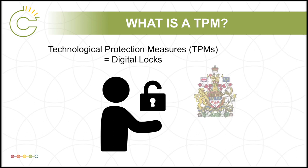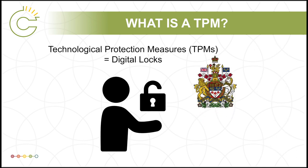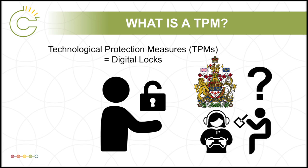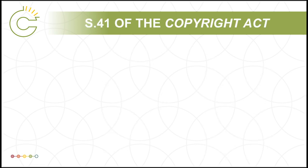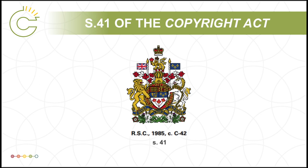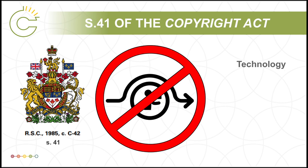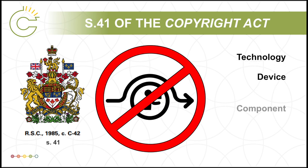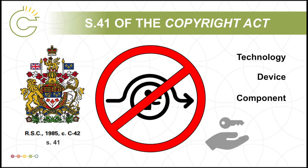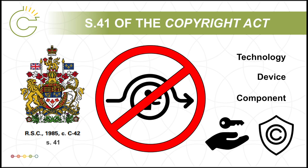This module will explain what TPMs are in Canadian copyright law, why we have them, and how they might affect both user rights and creator rights. Since 2012, Canada's Copyright Act has made it illegal to bypass, or circumvent to be specific, any effective technology, device, or component intended to control access to a work, or to protect a copyright holder's exclusive rights over the use of a work, through Section 41 of the Copyright Act.